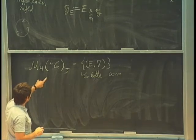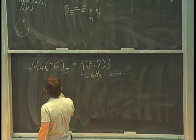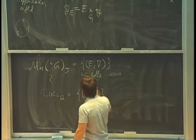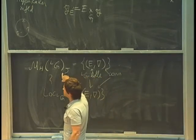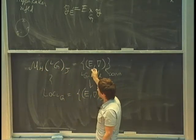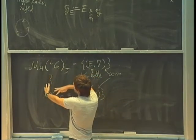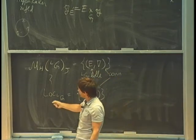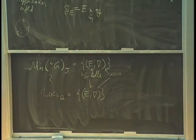This is very similar to loc LG: you also consider pairs (E, ∇). The difference is that in this physics context you get the moduli of stable flat bundles, whereas loc LG is the moduli stack of all flat bundles. Roughly, this is an open locus in loc LG, though not exactly the same because semi-stable flat bundles are sometimes identified with each other. These are very, very close. This is one of the reasons why this will end up connected to the categorical Langlands correspondence.